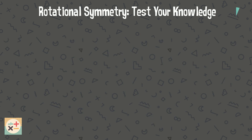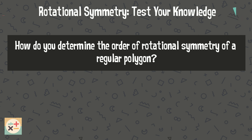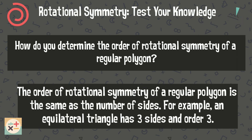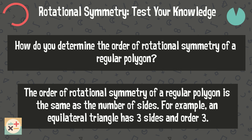Question 3: How do you determine the order of rotational symmetry of a regular polygon? The order of rotational symmetry of a regular polygon is the same as the number of sides. For example, an equilateral triangle has three sides and order three.